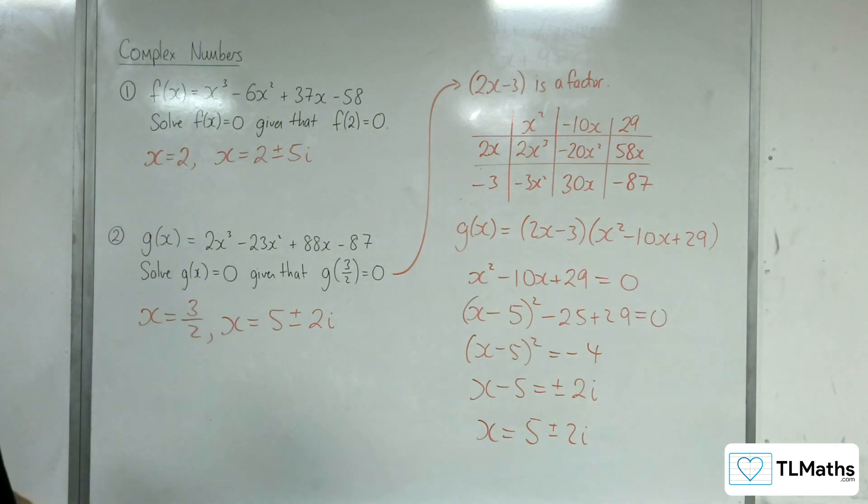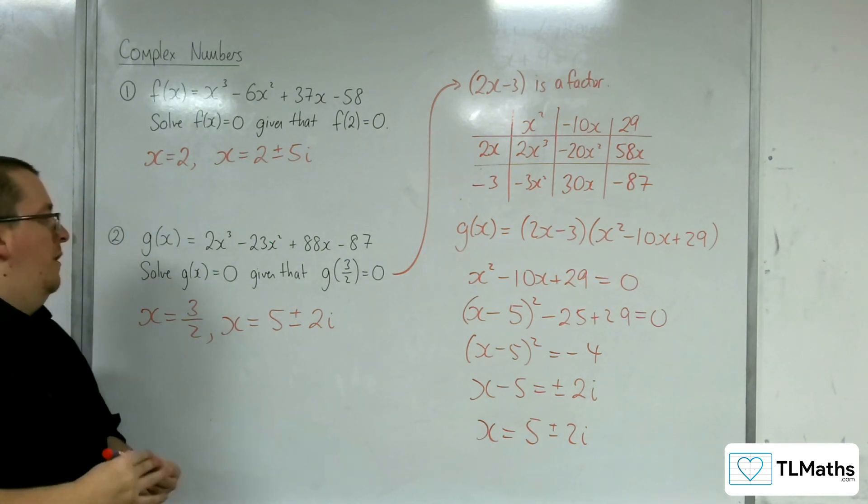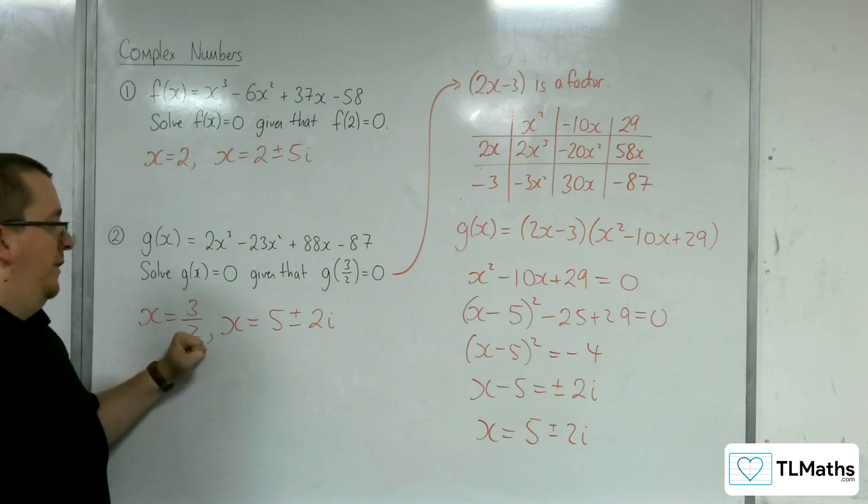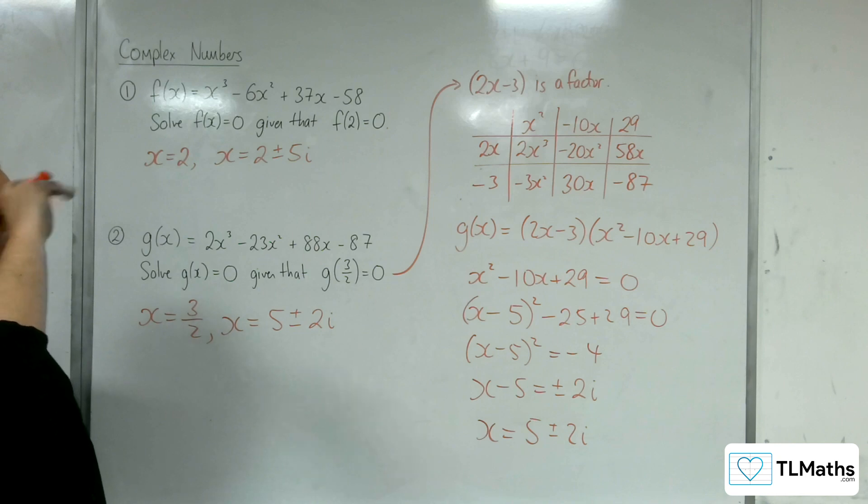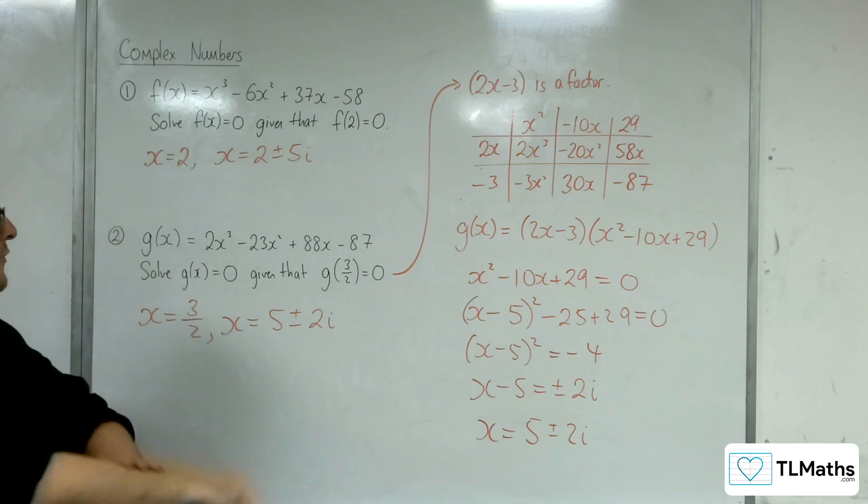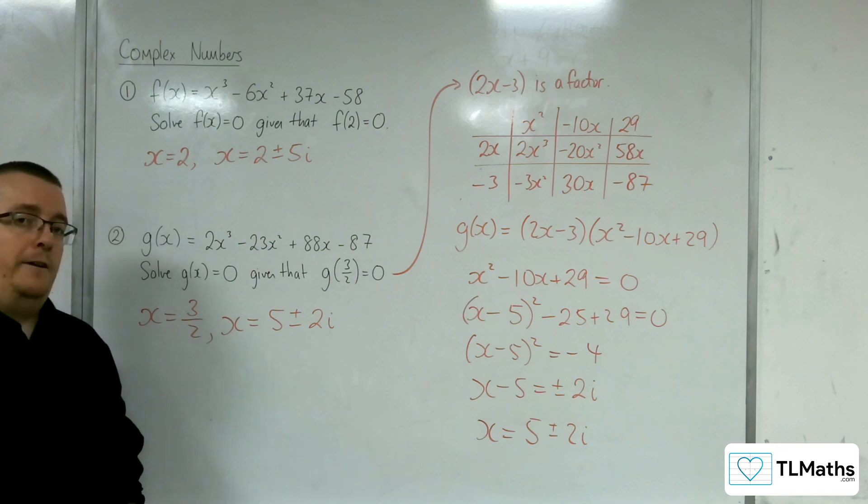So, x = 5 ± 2i are the two complex solutions and one real solution, x = 3/2. And so, that's how we can use our mathematical algebraic skills to solve these cubics rather than just typing them into the calculator.